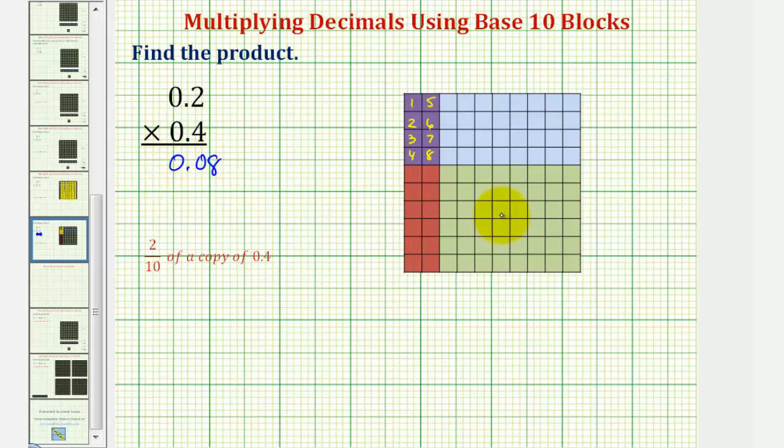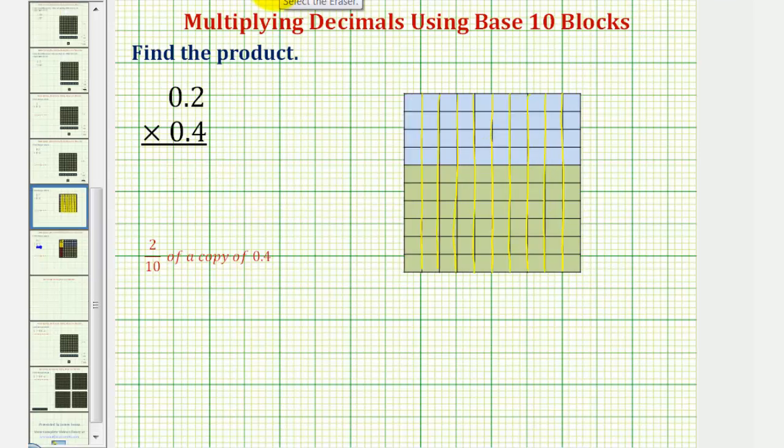Notice how by showing it this way, this resembles the paper folding method that we did when multiplying fractions. But if we go back to the previous slide, I do want to show that if we decided to just partition the 4 tenths, not the entire flat, we could have shown it this way as well.